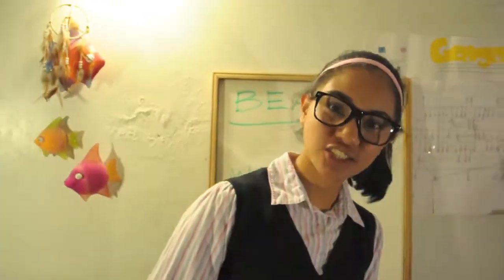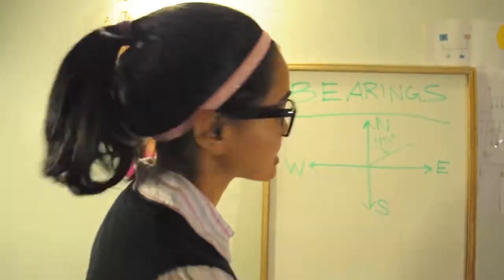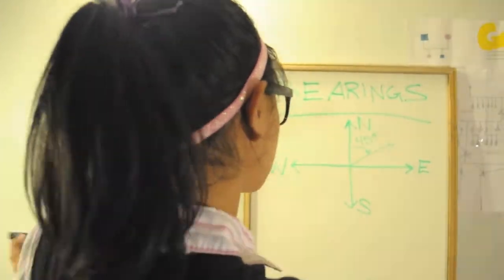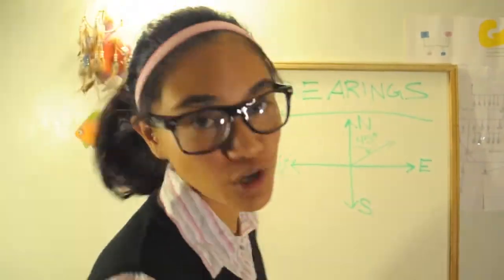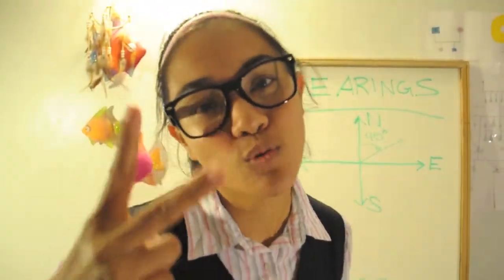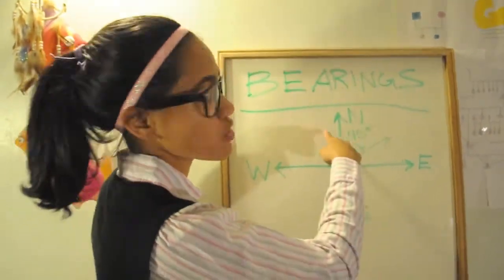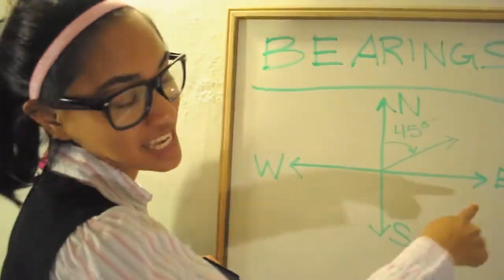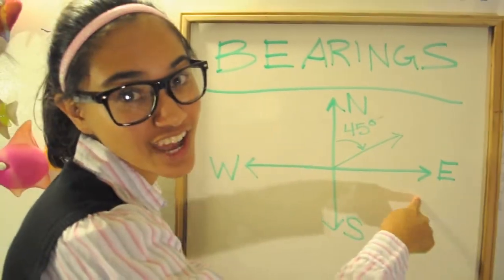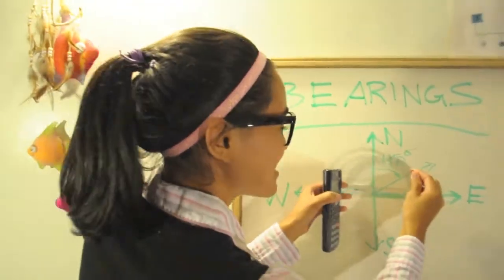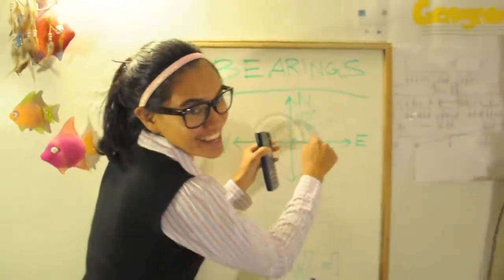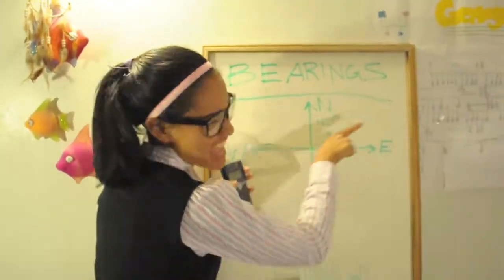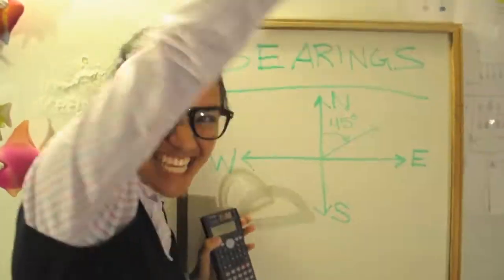Now there are a few things you gotta know about bearings. To find them, remember there's part one, two, or three. You've got north, you've got south, or you've got west, or you've got east. Or you've got an angle to navigate the sea.